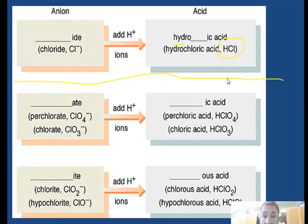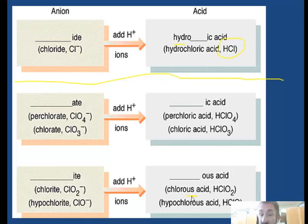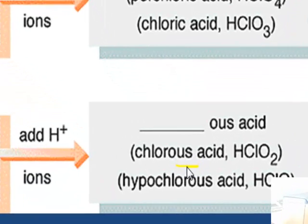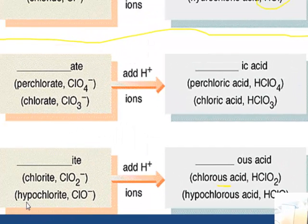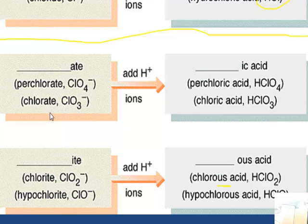Now let's look at the oxyacids. Any polyatomic ion ending in 'ite' changes to 'ous'. So ClO2⁻ becomes HClO2, and we call it chlorous acid. Notice there is no 'hydro' prefix for oxyacids. Hypochlorite becomes hypochlorous acid — don't confuse 'hypo' with 'hydro'. For ions ending in 'ate', like perchlorate or chlorate, 'ate' becomes 'ic': perchlorate becomes perchloric acid, and chlorate becomes chloric acid.